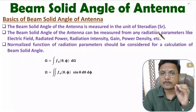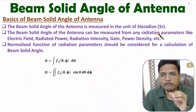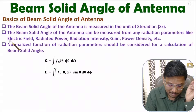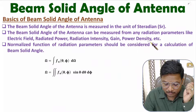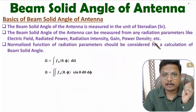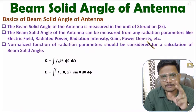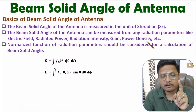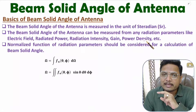If you want to calculate beam solid angle of an antenna, you can calculate it from any radiation parameter of the antenna. With an antenna, we have many radiation parameters: electric field, radiated power, radiation intensity, gain, or power density. Based on these radiation parameters of the antenna, one can calculate beam solid angle. It is a three-dimensional angle measured in steradians and can be calculated from any radiation parameter.